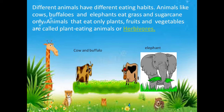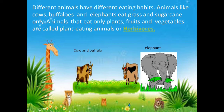In the same way animals also have different eating habits. Animals like cows, buffaloes and elephants eat grass and sugar cane only. Cows and buffaloes graze the grass — that is their food. In the same way elephants also like to eat grass and sugar cane.